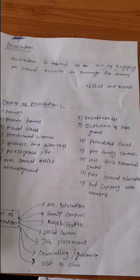Next is mental illness. Due to mental illness, including sexual illness or sexual mental disorder, some women engage in prostitution. Next is uneducated women — due to lack of sexual education, prostitution may happen in society.